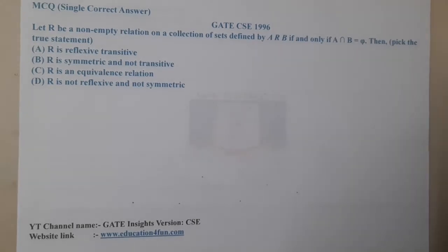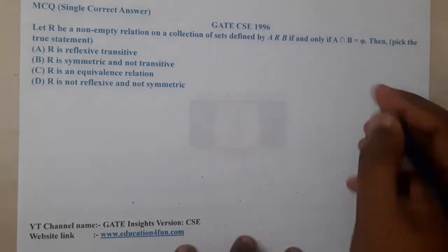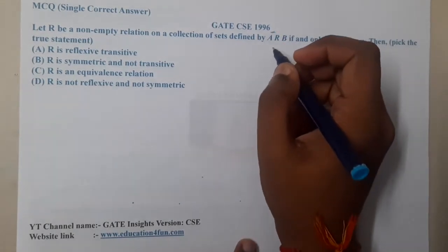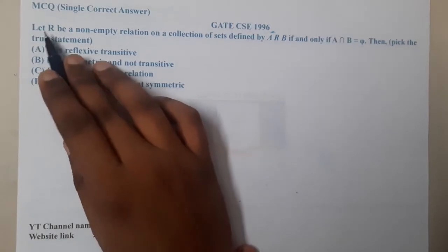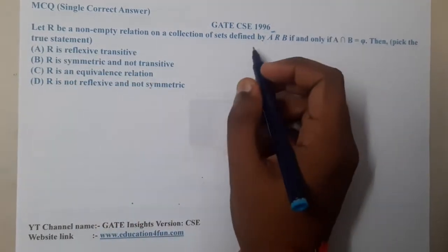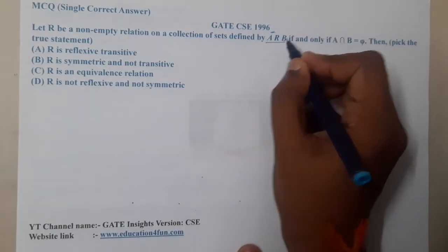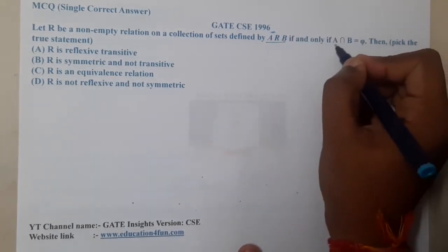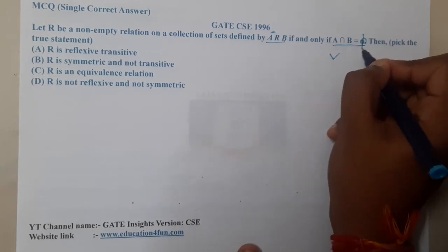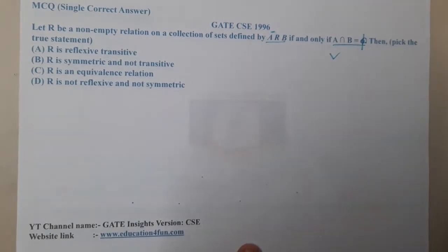Hello guys, we are back with the next lecture. This question belongs to GATE CSE 1996. The question is: let R be a non-empty relation on a collection of sets, defined as aRb if and only if a intersection b is equal to the empty set.